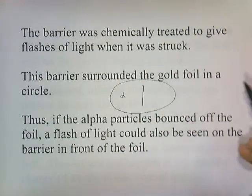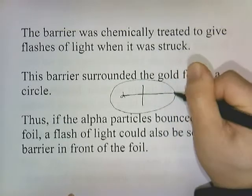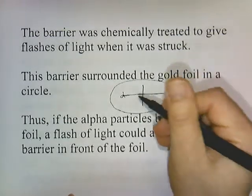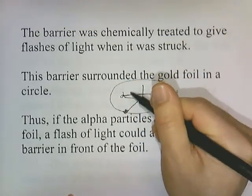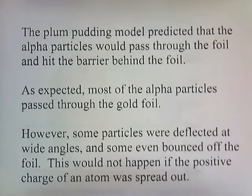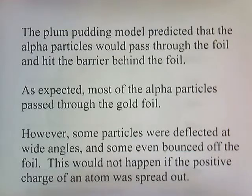The plum pudding model predicted that the alpha particles would pass through the foil and hit the barrier behind it. As expected, most of the alpha particles passed through the gold foil. However, some particles were deflected at wide angles and some even bounced back off the foil. This would not happen if the positive charge of an atom was spread out.